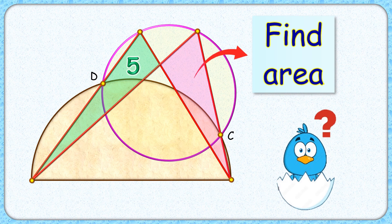Welcome everyone. This interesting question given to us is a semi-circle and a circle which are intersecting at points C and D. Given is the area of this green triangle is 5 cm square.